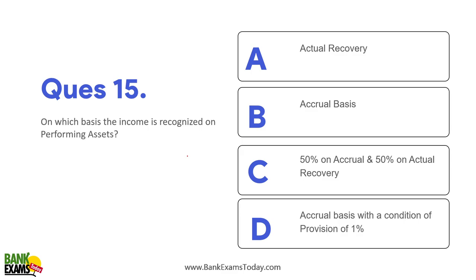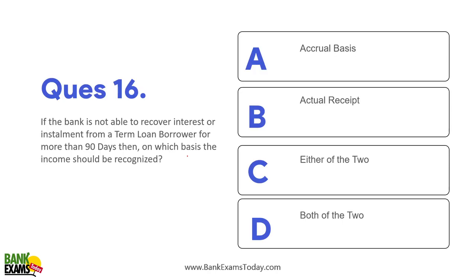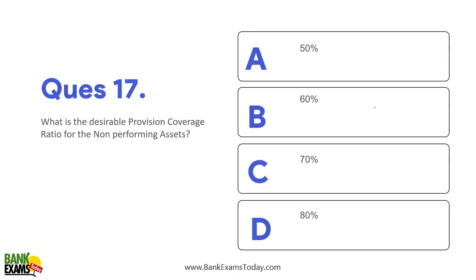Please remember: on a performing asset, income is recognized on the accrual basis; on an NPA, it is on the cash basis. If the bank is not able to recover interest or installment for a term loan for 90 days, then income should be recognized on the actual receipt or cash basis.